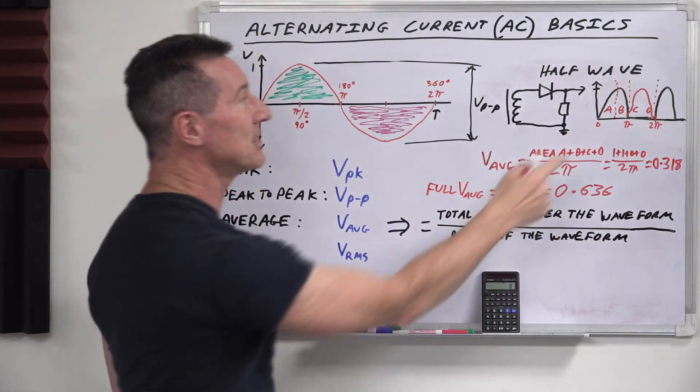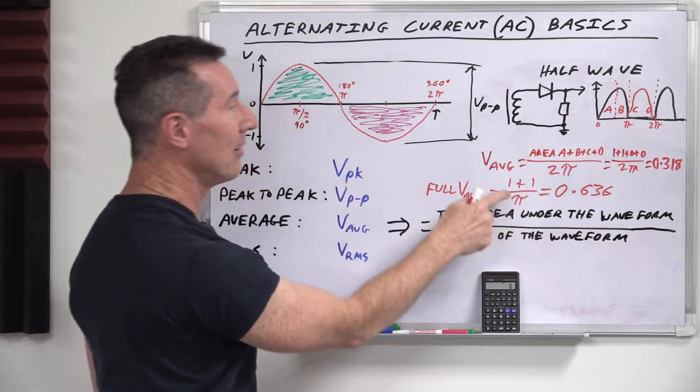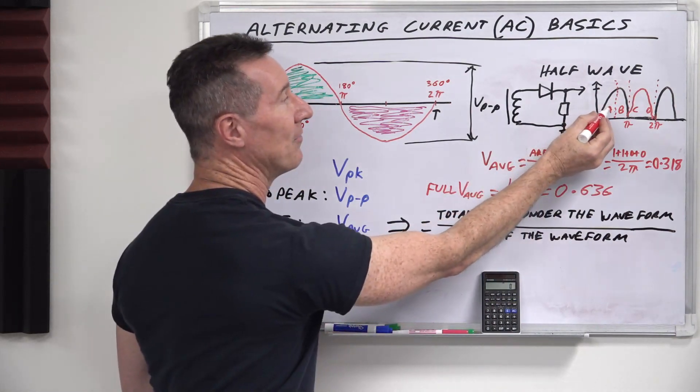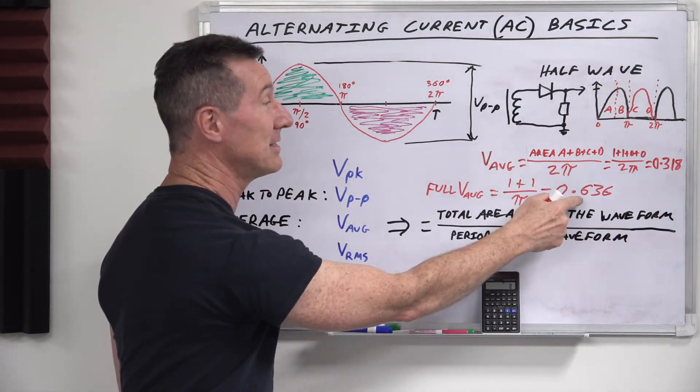The waveform is repeated, so our period is not 2π anymore, it's just π, like this. So it's 1 plus 1, area of A plus area of B, divided by π, which is 0.636.